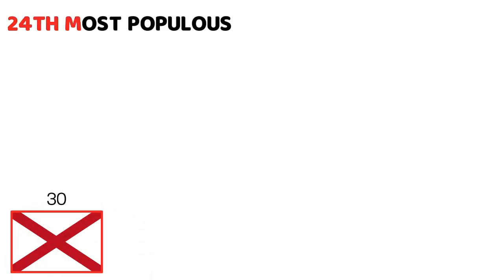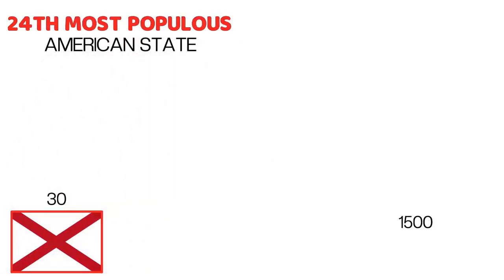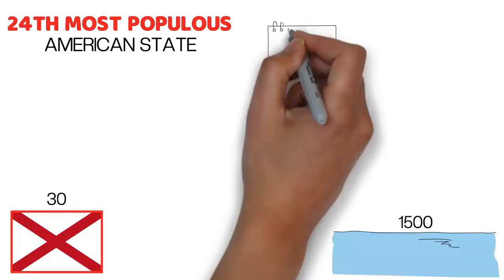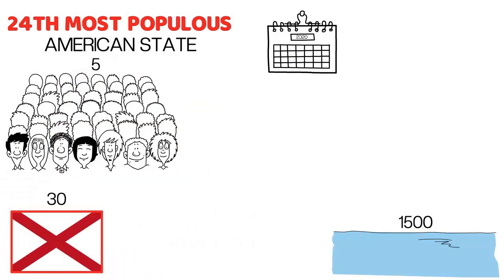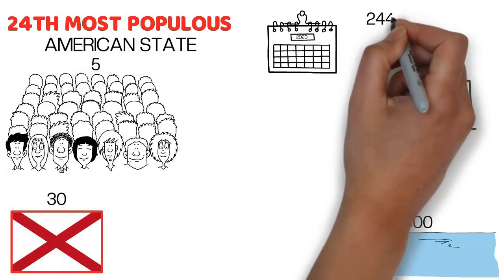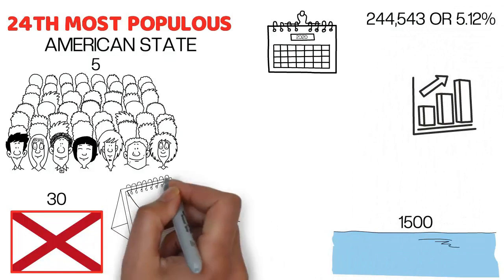Alabama is the 30th largest by area and 24th most populous American state, with a total of 1,500 miles of inland waterways. As of 2020, the population of Alabama was more than 5 million, an increase of 244,543 or 5.12% since the 2010 Census.